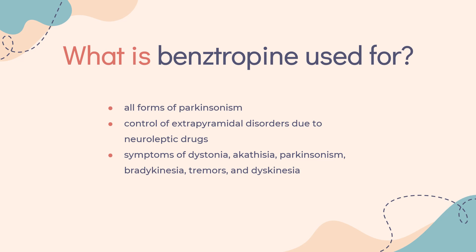What is benztropine used for? Benztropine is indicated to be used as an adjunct in the therapy of all forms of Parkinsonism. It can also be used for the control of extrapyramidal disorders due to neuroleptic drugs.